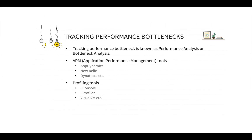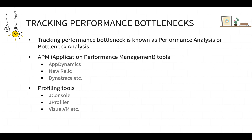When you run a performance test and notice there is a performance bottleneck, you then track it down — a process known as performance analysis or bottleneck analysis. This can be done with the help of certain tools like APM (Application Performance Management) tools or profiling tools. APM tools monitor your application environment and provide detailed metrics about application performance so you can track down bottlenecks. Some well-known APM tools are AppDynamics, New Relic, and Dynatrace.